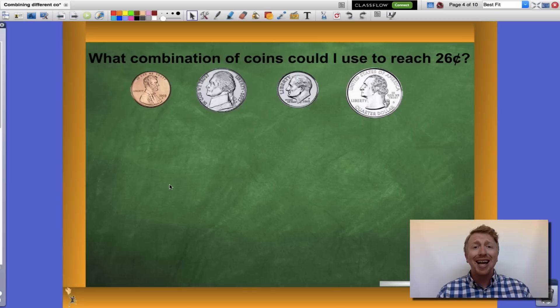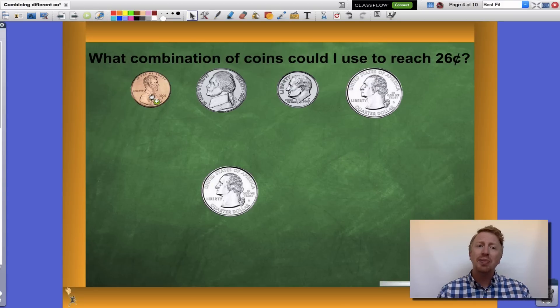Well guys, I can reach 26 cents in a ton of different ways. I'm going to show you a few right now. I'm going to start with my quarter. I know my quarter is worth 25 cents. That puts me one away from 26 cents, so I should be able to add my penny worth 1 cent to get me to 26 cents.